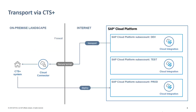In the diagram, the landscape and the transport process is sketched. For the demo, we assume you want to transport content between your development account and your production account running in the cloud. The CTS Plus system is located within your company domain. The connection between your development environment and the CTS Plus system is secured via a cloud connector establishing a secure tunnel. When you trigger the transport of an integration package within your development tenant, a CTS Plus transport request is automatically created and the archive file is attached. Once the transport request is released, it is put into the import queue of the production subaccount. Once the import is triggered, the content is created on the production tenant.